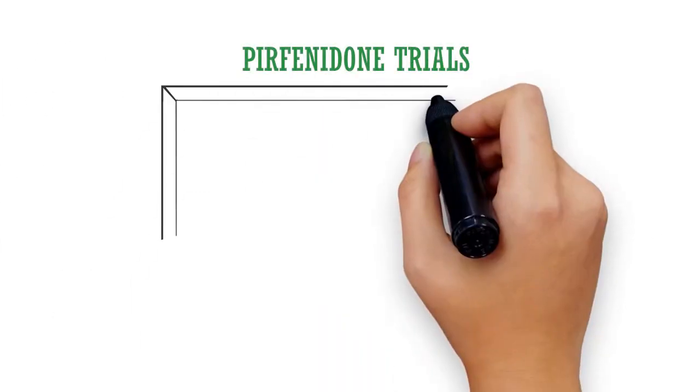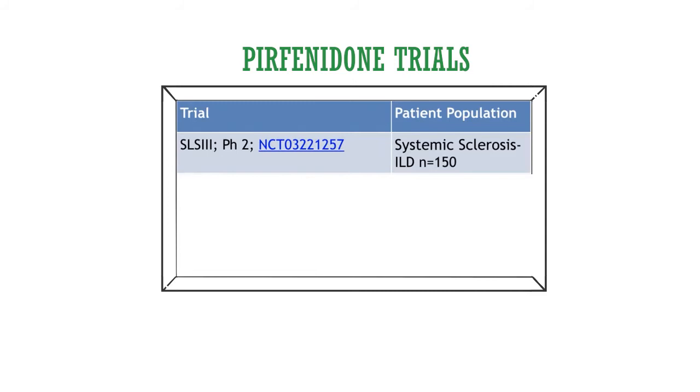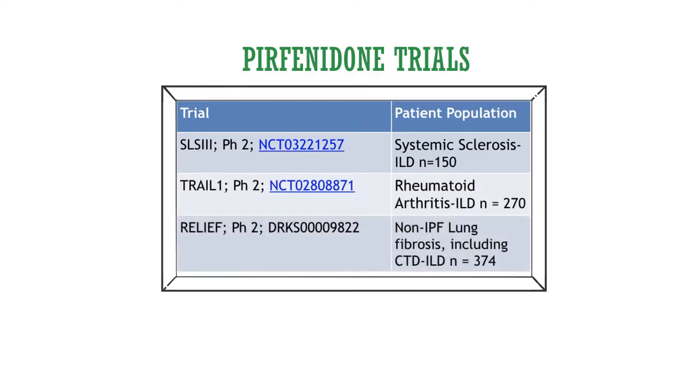The trials listed under pirfenidone are ones that have used or are currently using pirfenidone. SLS-3 is a trial enrolling with pirfenidone for patients with systemic sclerosis. TRAIL is a trial enrolling for patients with rheumatoid arthritis. And then there is RELIEF, which is a non-IPF lung fibrosis population looking at the role of pirfenidone in their management.